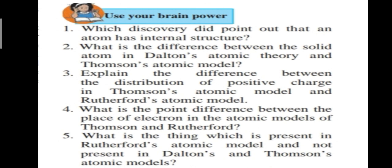Fourth question: what is the difference between the place of electrons in Thomson's and Rutherford's atomic models? In Thomson's atomic model, electrons (negative charge) are embedded like seeds of a watermelon in the positively charged sphere of the atom. In Rutherford's atomic model, electrons revolve around the positively charged nucleus which is present at the center of the atom.